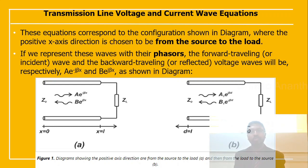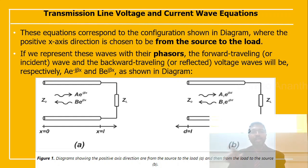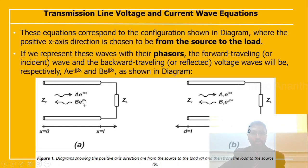These equations correspond to a configuration where the positive x-direction is chosen from source to load. Representing these waves as phasors, the forward traveling (incident) wave is A·e^(−jβx) and the backward traveling (reflected) wave is B·e^(+jβx). For transmission line problems, it is more convenient to choose the positive axis direction from load to source. To find the new equations, we replace x with (L − d), giving the forward traveling wave as A₁·e^(+jβd), where A₁ = A·e^(−jβL).